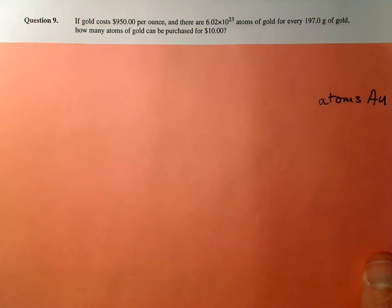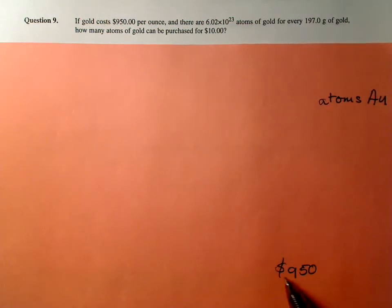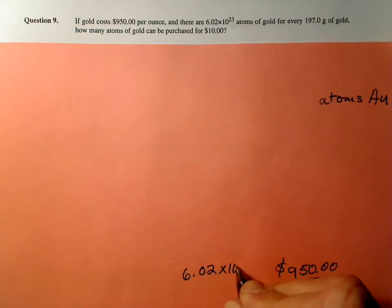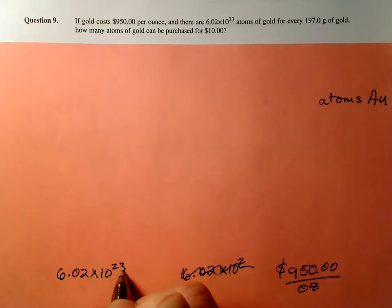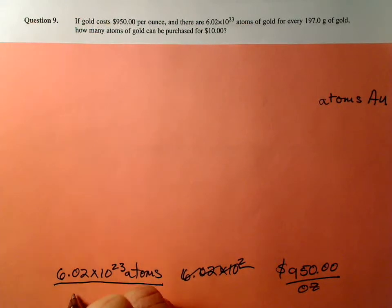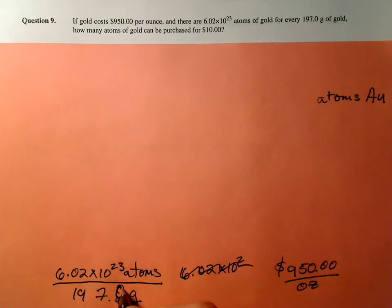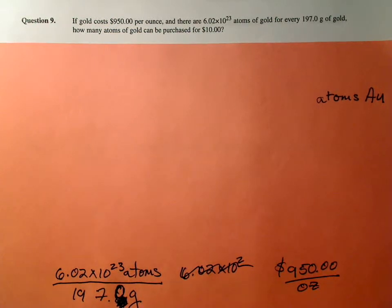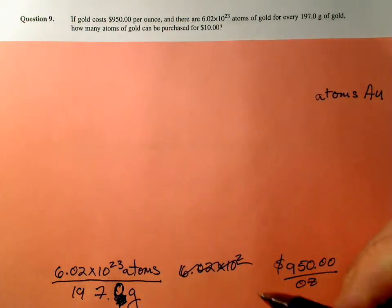What do we have? We have some built-in conversion factors. We have $950 per ounce - that's not fluid ounce. We also have 6.02 times 10 to the 23rd atoms of gold per 197 grams. So those are handy. What else do we have? $10. So the only thing that's not something for something is the $10.